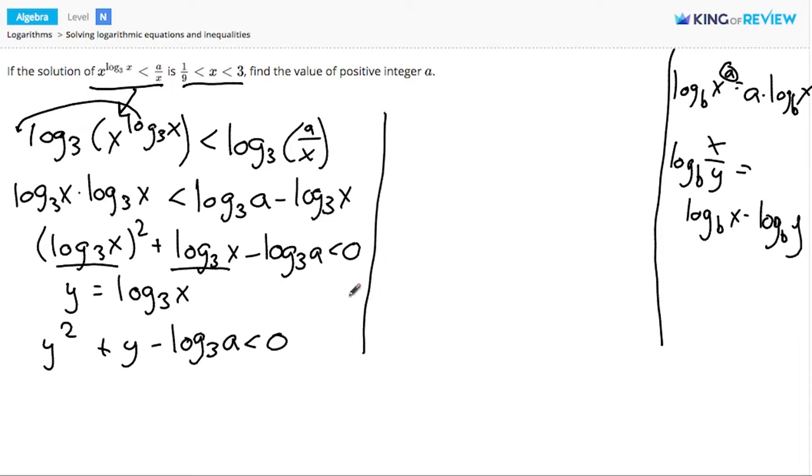So now, let's look at the answer. The solution we know is 1 ninth less than x less than 3. I've left a lot of space in here because I would like to turn x into y, so that I get two equations in terms of y. To turn x into y, I need to take the log base 3 of x. And to make it fair, I need to take the log base 3 of the left and right sides as well.